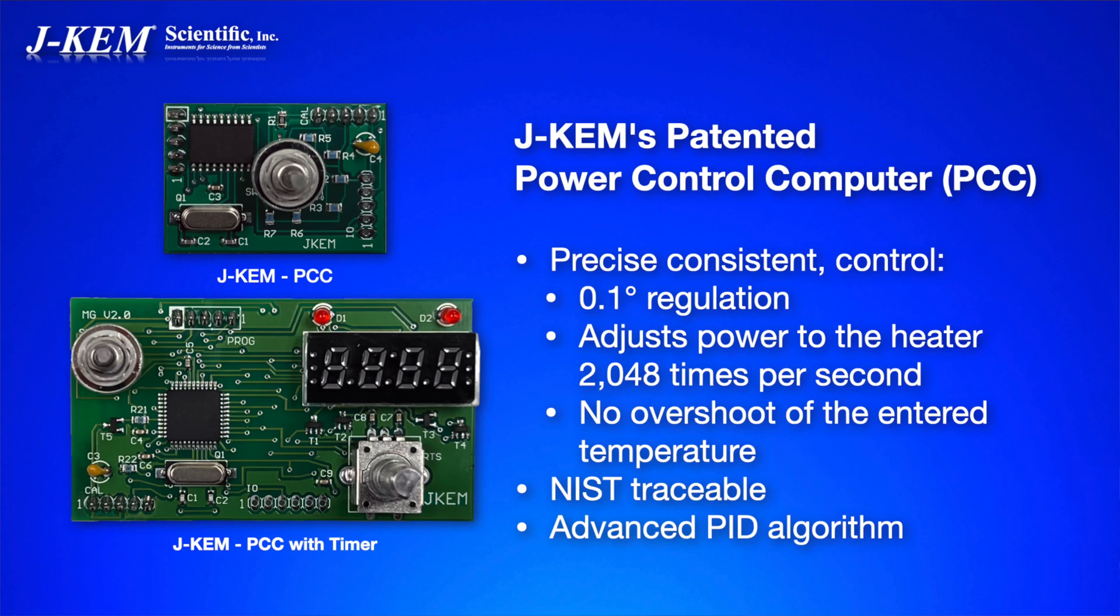What's unique about JCAM's temperature controllers is a patented power control computer. This computer proportions power to the heating metal or the vacuum oven or whatever heater you have plugged in 2048 times a second. That's how JCAM's controller can put one milliliter of solution in a five milliliter round bottom flask, put it into a five milliliter heating metal and it'll still regulate that to 0.1 degree.